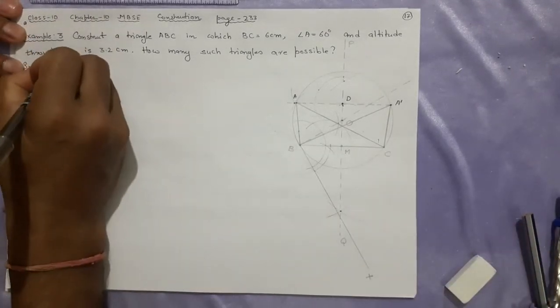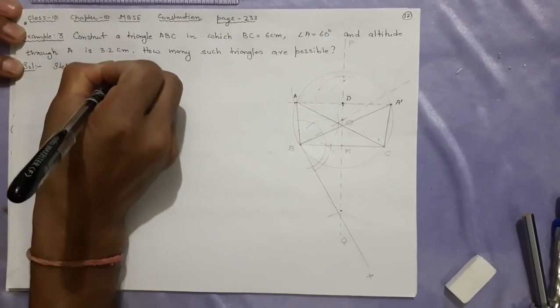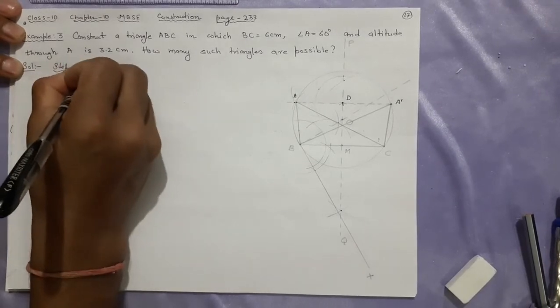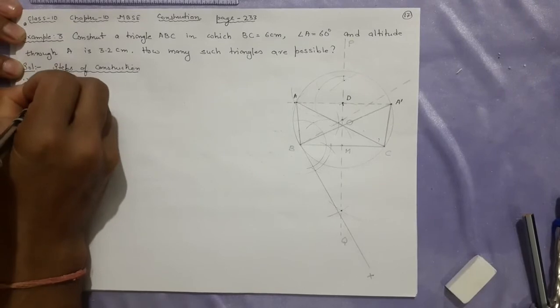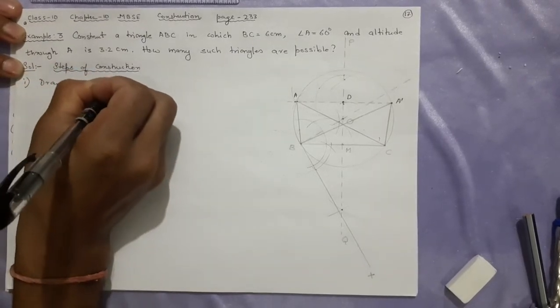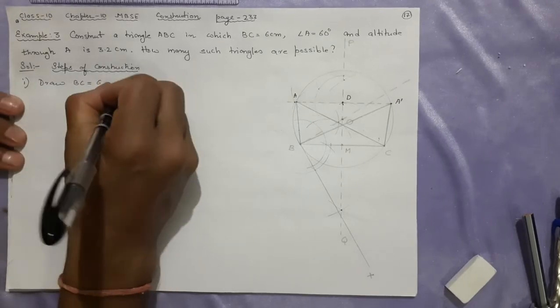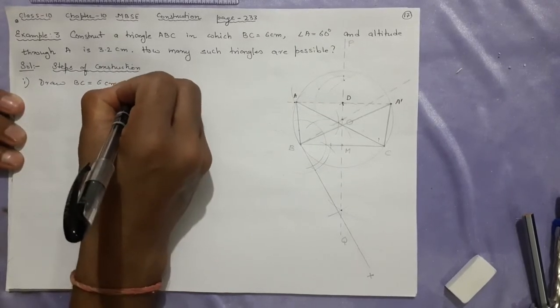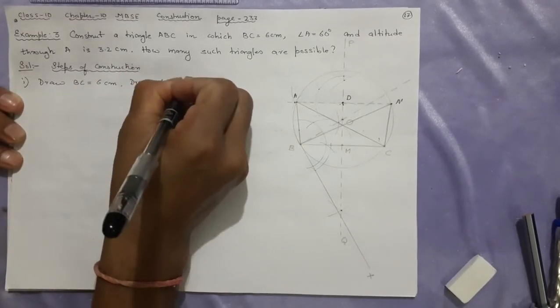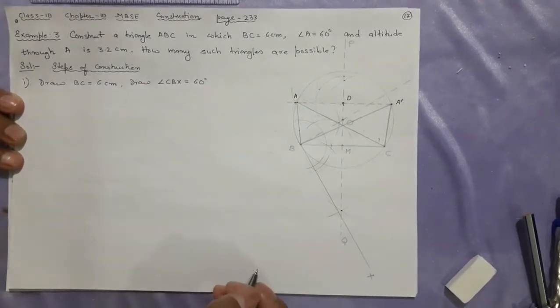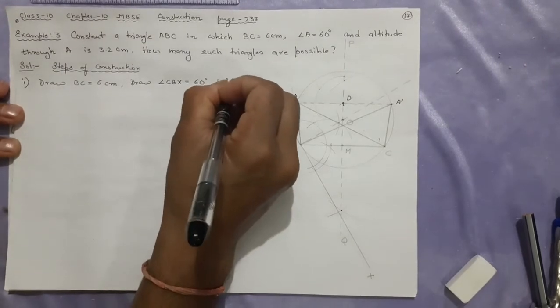Steps of construction. It will be like this. Number one: Draw BC equal to 6 centimeters. Remember the first step we have done. After that, what we did? Draw angle CBX equal to 60 degrees. Just to make it contain less content, CBX equal to 60 degrees below BC.